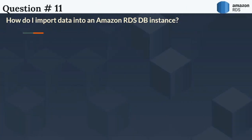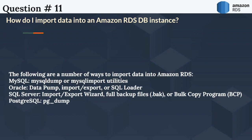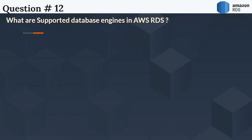The next question is: How do I import data into an Amazon RDS DB instance? The following are a number of ways to import data into Amazon RDS. MySQL: mysqldump or mysqlimport utilities. Oracle: Data Pump, Import/Export, or SQL Loader. SQL Server: Import/Export Wizard, full backup files, or Bulk Copy Program (BCP). PostgreSQL: pg_dump.